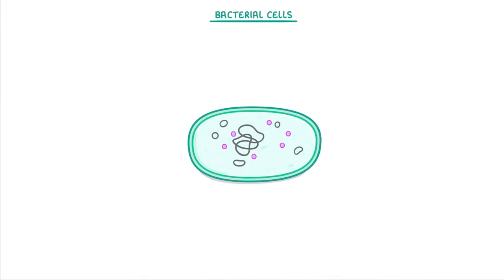The last thing we need to look at are bacterial cells. As we said earlier, bacteria are prokaryotes and consist of a single prokaryotic cell. This means we can refer to them as unicellular, which just means a one-cell organism.